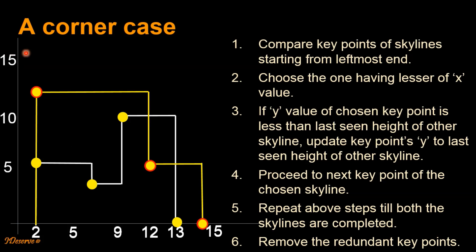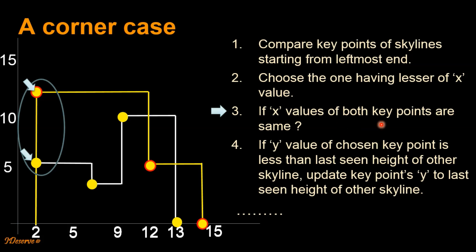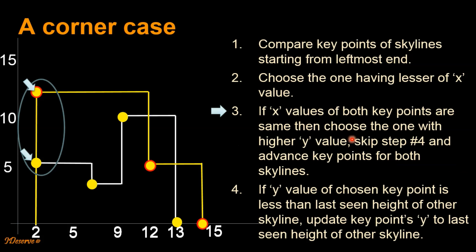Now let's look at the corner case: what happens if the x coordinates of the key points being compared are the same? If x values of both key points are equal, we choose the one with the higher y value, and we skip step 4 — we don't compare the y value with the last seen height of the other skyline. Instead of advancing only the selected skyline's pointer, we advance key points for both skylines. So the key point with the higher y is selected, y is not updated, and we proceed to the next key points for both skylines.